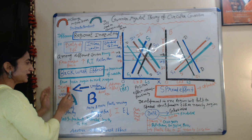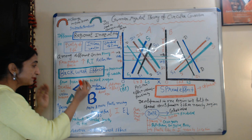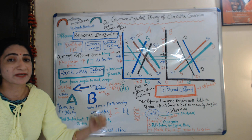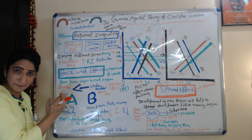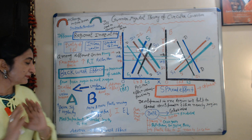Backwash effect means movement of wealth from poor regions to rich regions. When people from an underdeveloped region migrate to a developed region, it creates an adverse effect on the underdeveloped region. This is called the backwash effect.